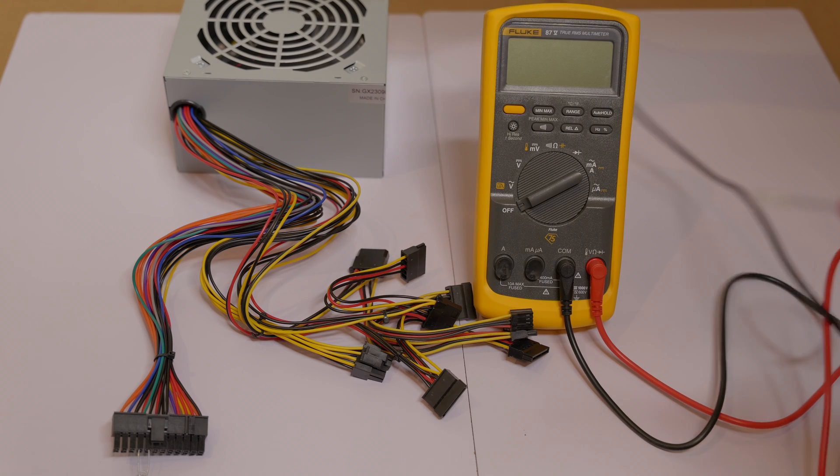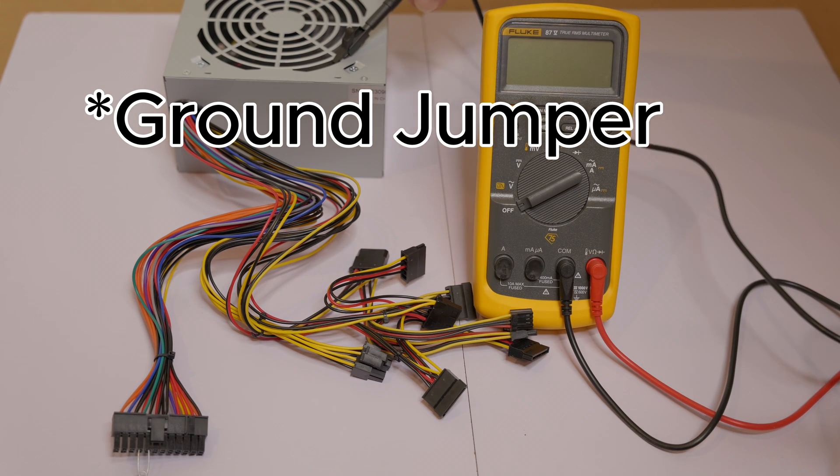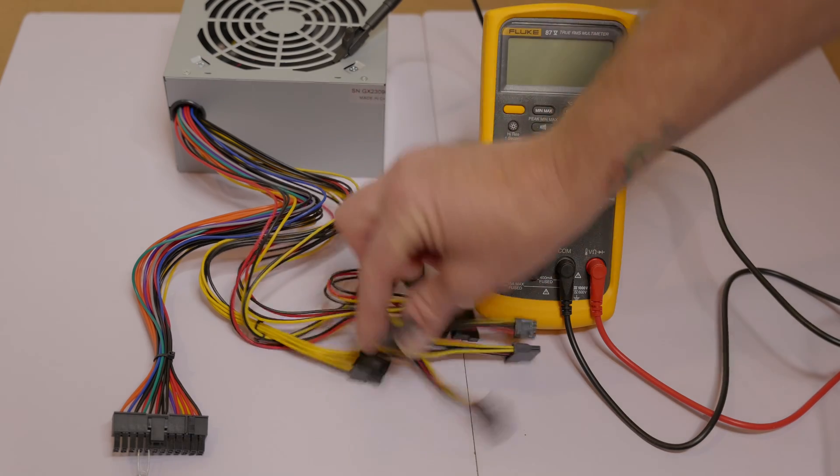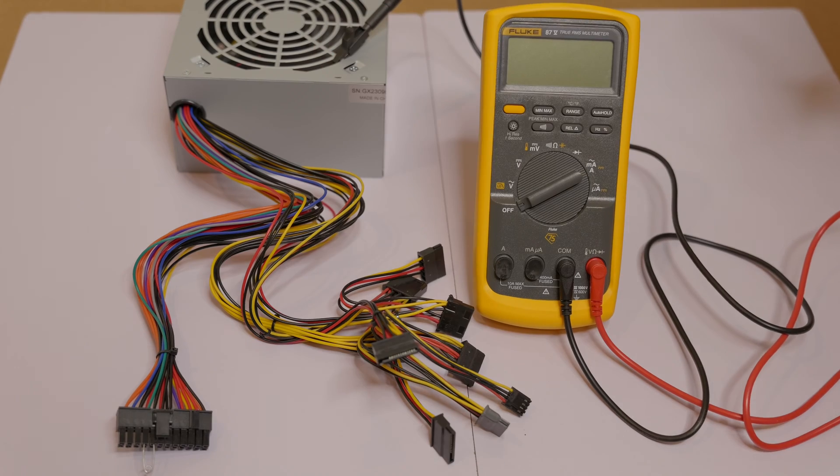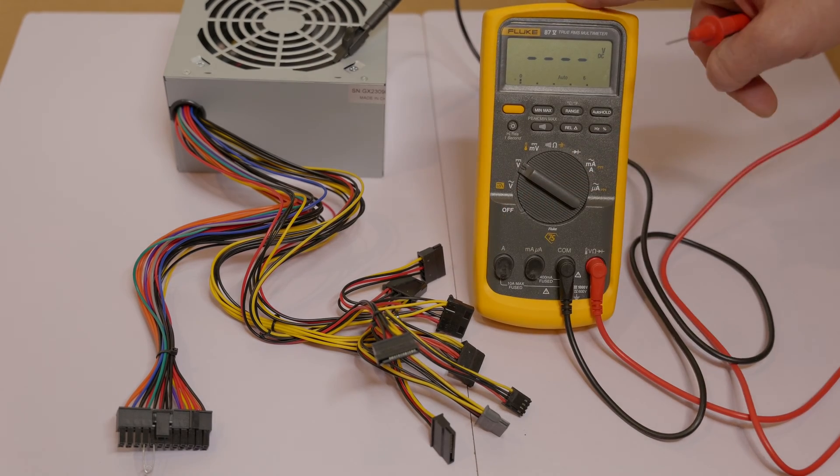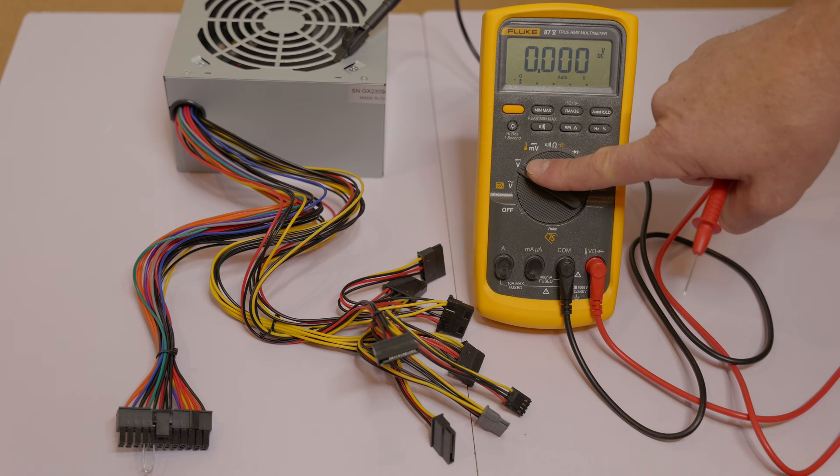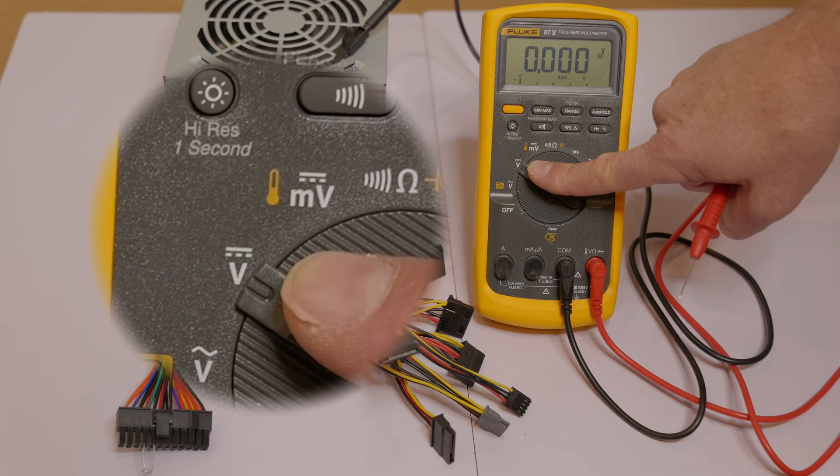Now make sure you connect a good ground jumper. I'm going to use the metal case of the power supply itself with an alligator clip. Feel free to use any of the black wires on any of the connectors—they're all connected to the ground. Now that we've got our black probe ground hooked up, we'll switch our multimeter to the volts DC setting. That's the V with the solid and dashed line underneath.